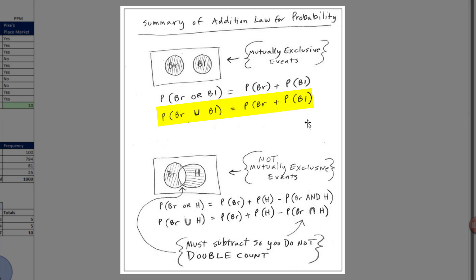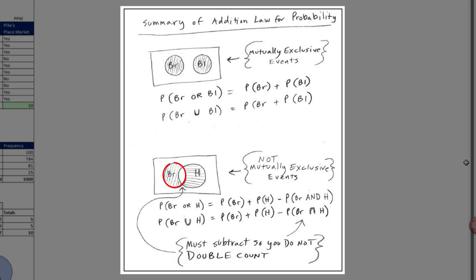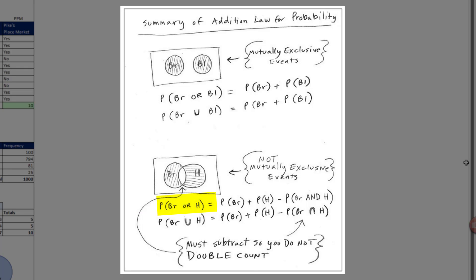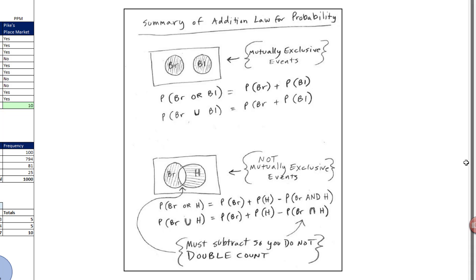When we have not mutually exclusive events, with the Venn diagram you can see the overlap. That overlap is the AND — that's where both conditions are true. In this case, we have brown hair or hazel eyes. The formula: we add the two probabilities, but we have to subtract the intersection — the overlap — the area where there's an AND logical test. The U means union, so probability of brown hair union hazel eyes. We add the two probabilities and subtract the AND logical test between the two events. That symbol means intersection.